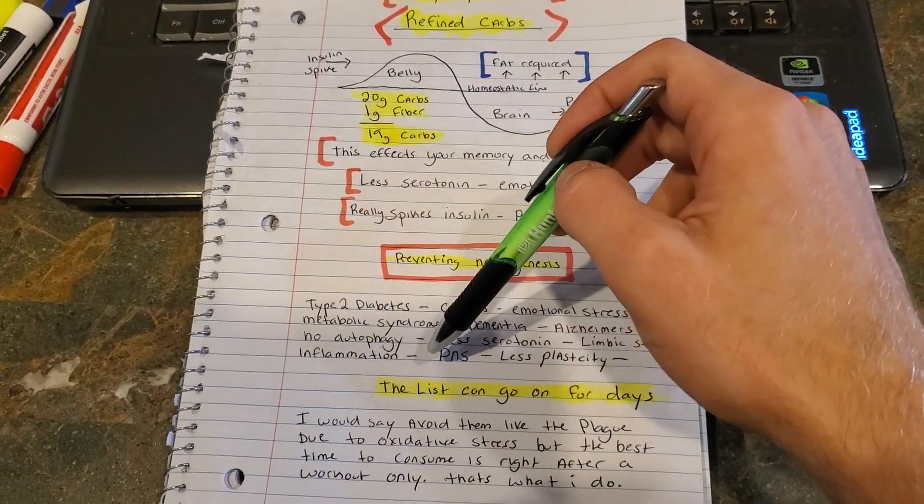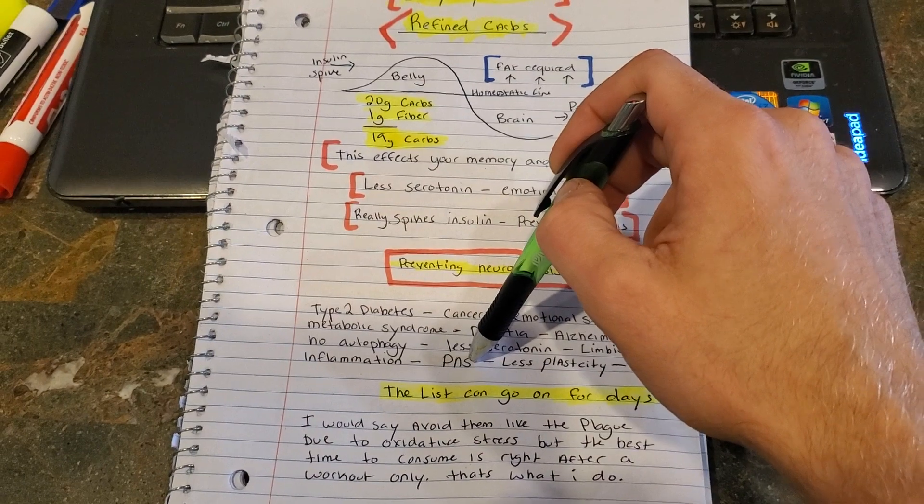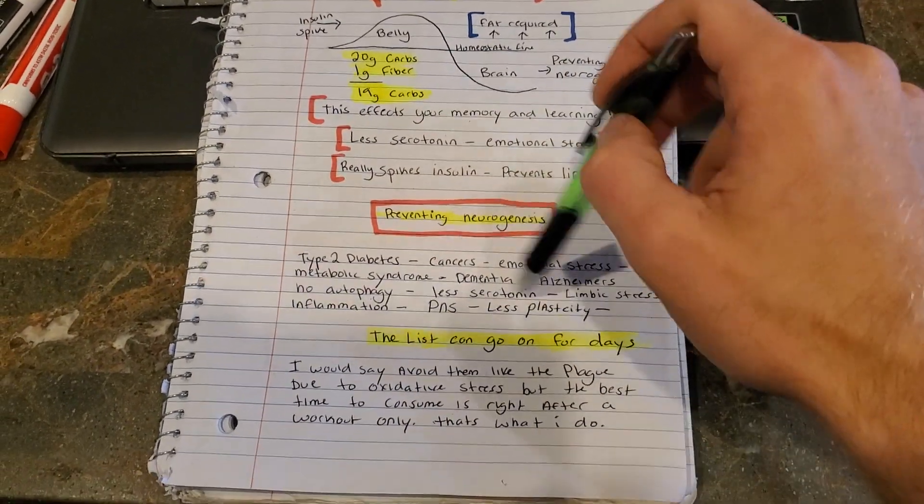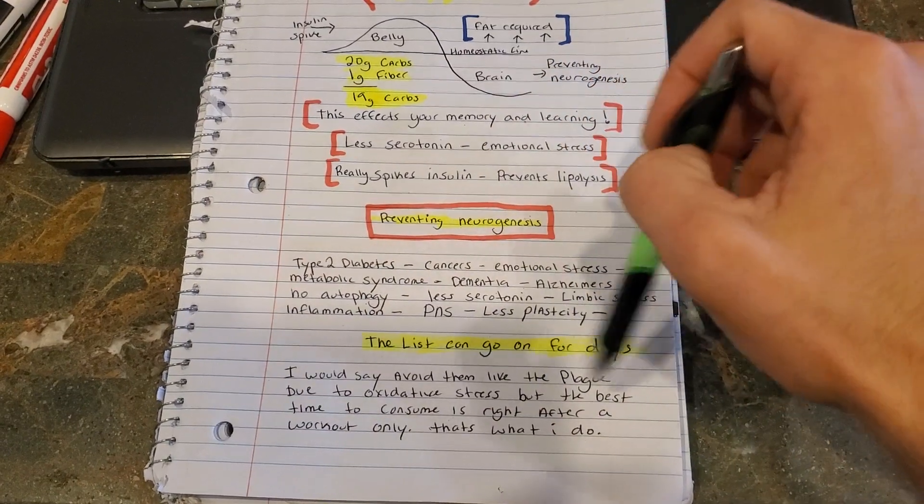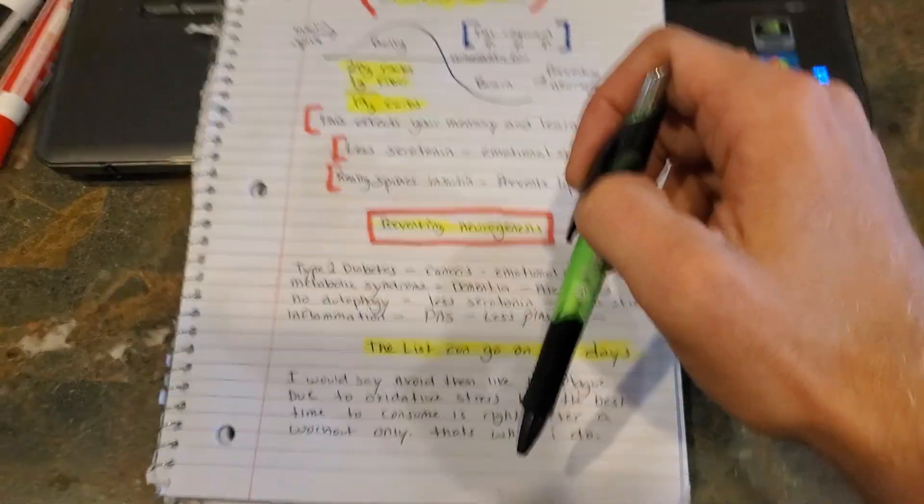So preventing neurogenesis is very bad, but refined carbohydrates are even worse. You've got diabetes, cancers, emotional stress, metabolic syndromes, dementia, Alzheimer's, no autophagy which is your cellular cleanup. Less serotonin production in your body, especially if you're eating regular salts versus sea salts.